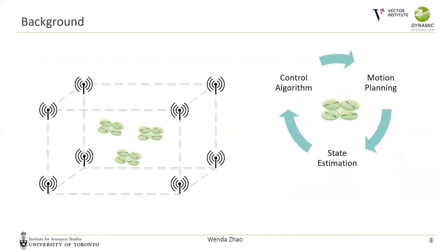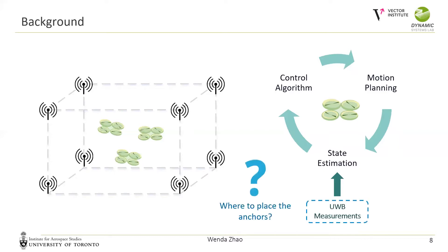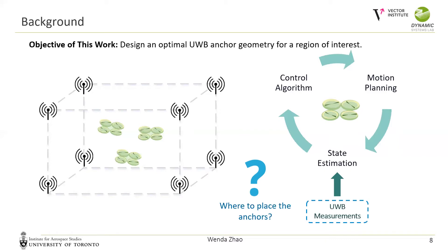In general, robotic systems involve control algorithms, motion planning, and state estimation. In an Ultra-Wideband-based localization system, robots fuse UWB measurements coming from pre-installed anchors. A fundamental problem for such a localization system is where to place the anchors to provide good localization performance in a predefined region of interest. Therefore, the objective of this work is to design an optimal UWB anchor geometry for a region of interest.